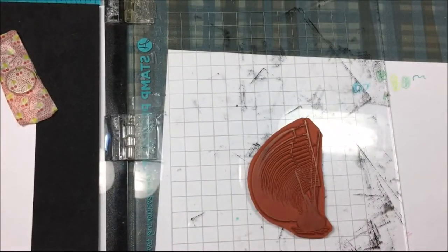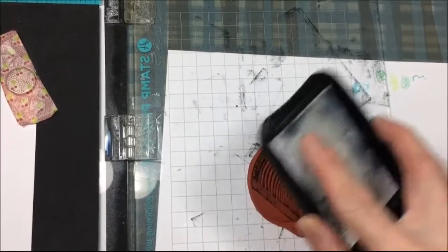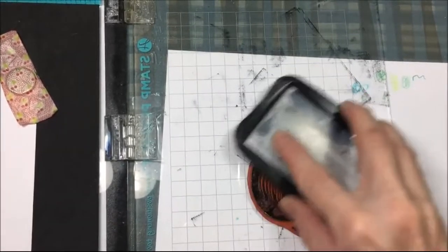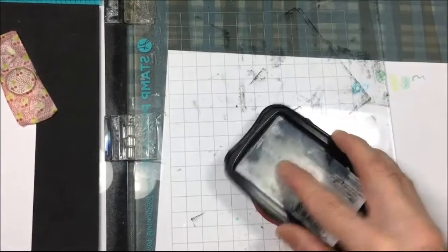I'll be inking up this stamp with the Memento Tuxedo Black ink and I'm going to ink it up several times and stamp it over and over until I get the nice black impression that I want.